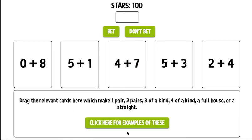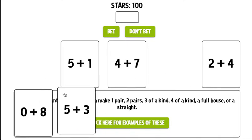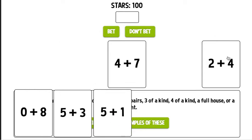So let's take a look and see what I have. I have 0 plus 8 which is 8, I have 5 plus 1 which is 6, 4 plus 7 which is 11, 5 plus 3 which is 8, and 2 plus 4 which is 6. So I have two pairs. So I'm going to drag those two pairs down to this window: 0 plus 8, 5 plus 3, 5 plus 1, and 2 plus 4.